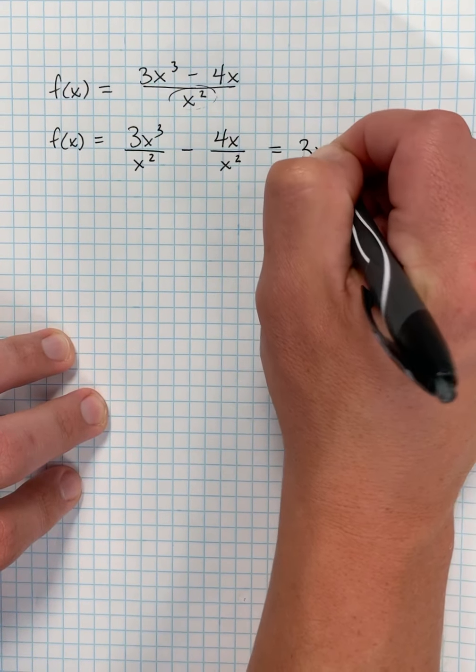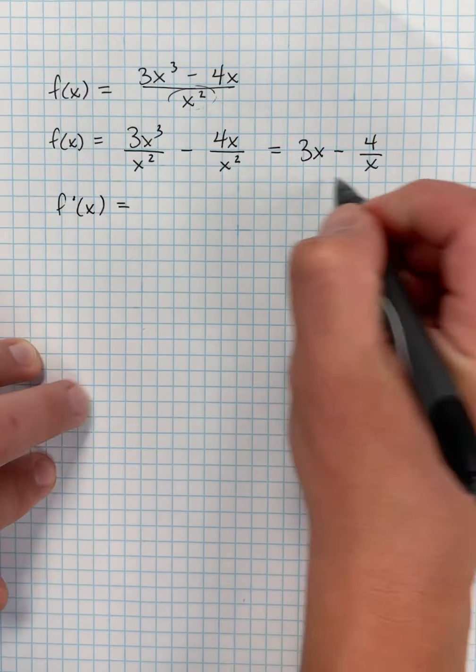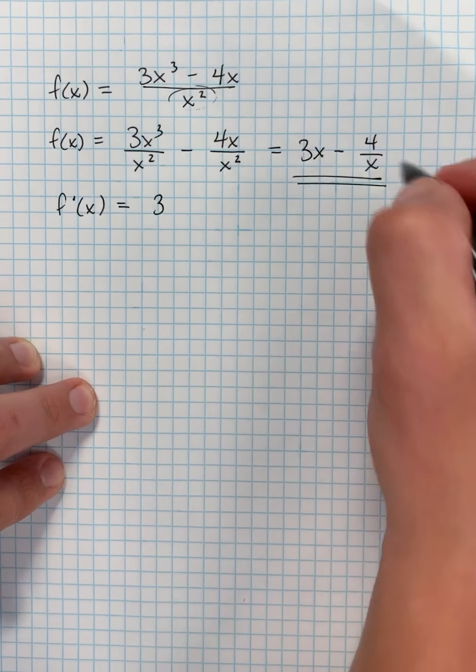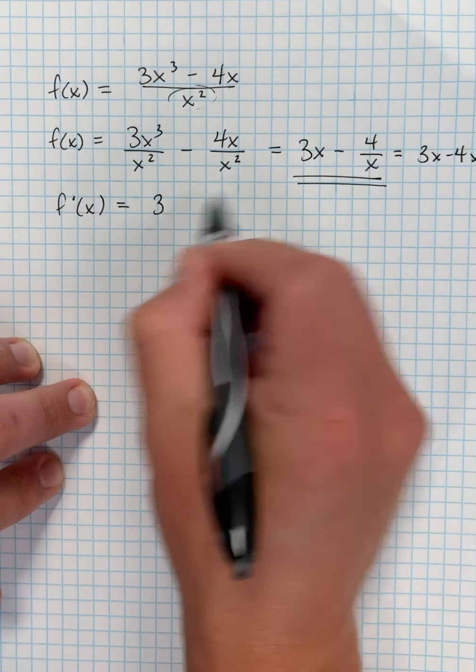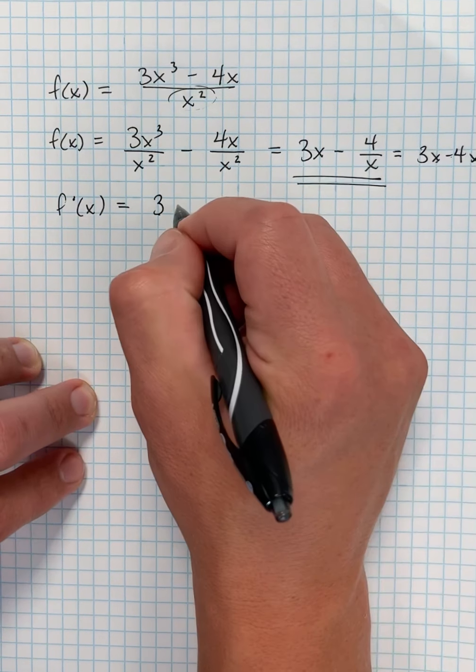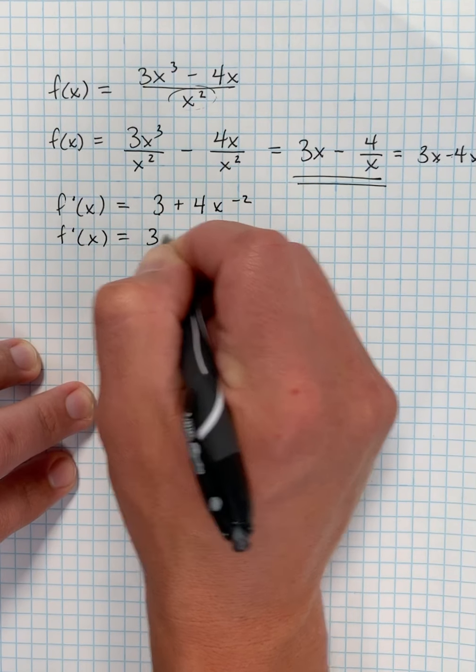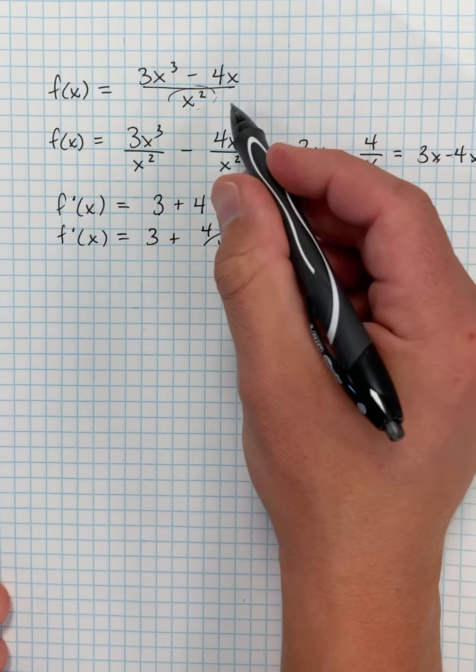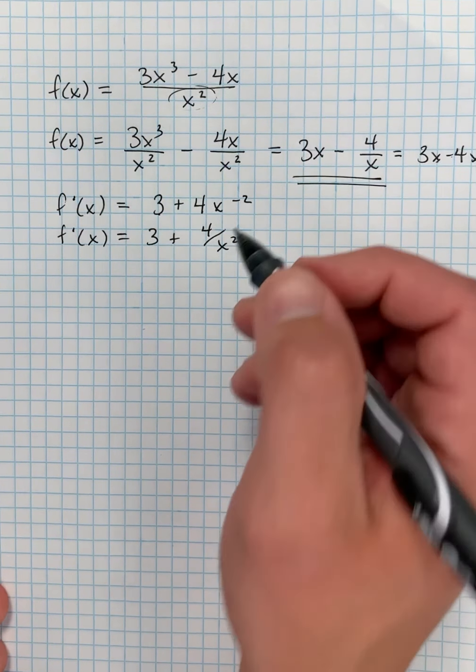And I can do that because I have a single term in the denominator. That means that this is equal to 3x minus 4 over x. So f'(x) is equal to the derivative of this function. Well, let's see. The derivative of 3x is 3. I'm actually going to rewrite this one more time. It's 3x minus 4x to the negative first power. So the derivative of 3x is 3. And the derivative of negative 4 times x to the negative first would be plus 4x to the negative second. So rewriting this without the negative exponent, I have 3 plus 4 over x squared. And you can actually, by rewriting this this way, you can avoid using the quotient rule and just go right to kind of a double power rule.